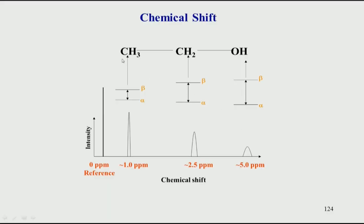This is just a brief quick look at the chemical shifts. In a given molecule, let us take the example of ethanol. The different hydrogen atoms have different energies because they have different chemical shift values, which arise from the electron density around these hydrogens. This difference in electron density results in different energy levels. Remember, omega is gamma times V0. So if the B value changes, omega changes, and that is converted into a chemical shift.